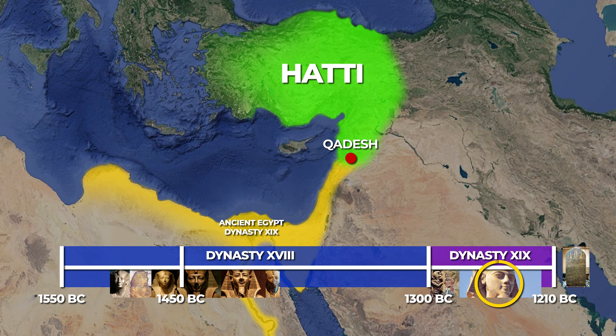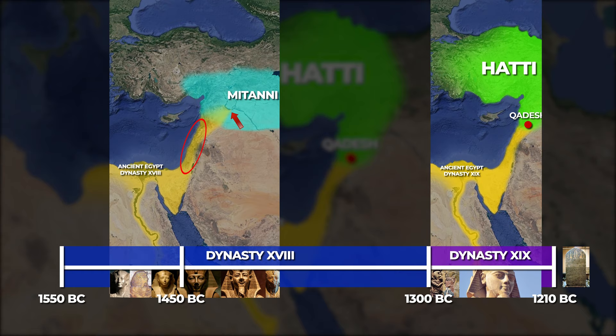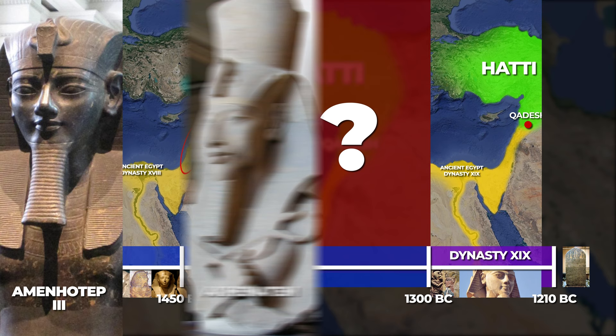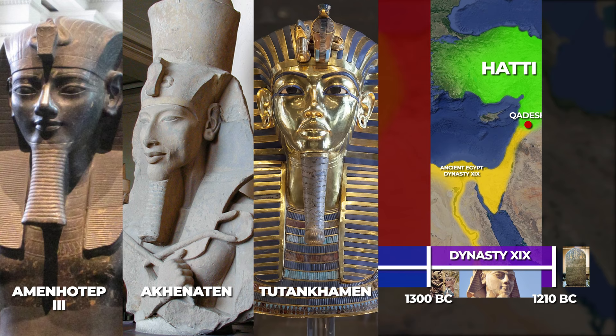However, if we plot these two periods of conquest on our timeline, we observe that there are around a hundred years in between these two periods of expansion. What happened during this time that resulted in the Egyptians having to reacquire their territories in the Levant? The pharaohs who ruled during this roughly 100-year period are as follows: Amenhotep III, Akhenaten – whom we have previously met – perhaps the most famous pharaoh of all, Tutankhamun, Ay, and Horemheb.